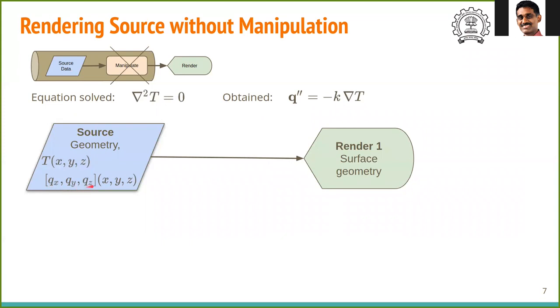Each of these fields is a function of x, y, z coordinates. Our interest is to get two renderings. The first render is of just the geometry and the second render is that of the surface temperature profile.